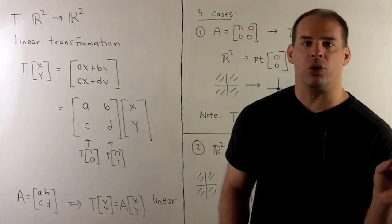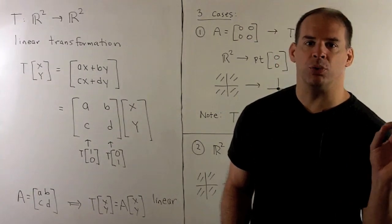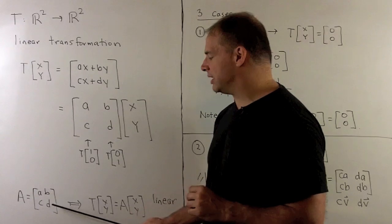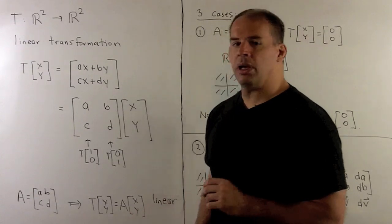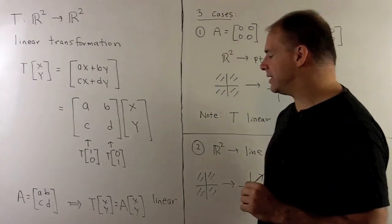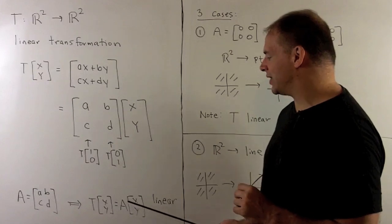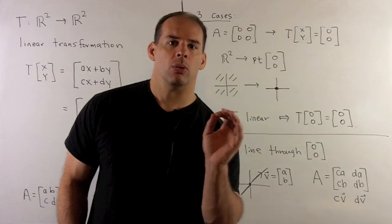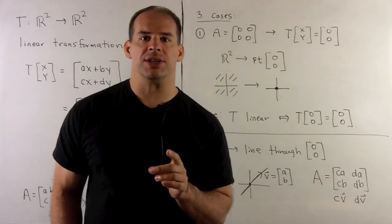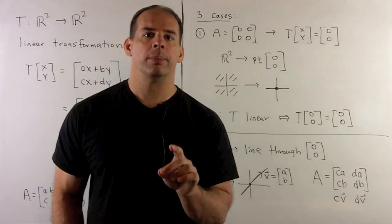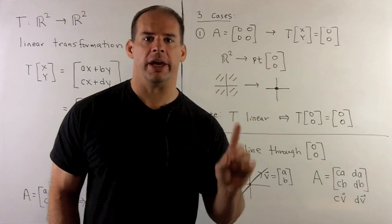In the other direction, if I have a two-by-two real matrix A given by ABCD, we get a linear transformation from R2 to R2 by defining T as A times XY. We'll have three cases: R2 is carried to either a point, a line, or a plane.